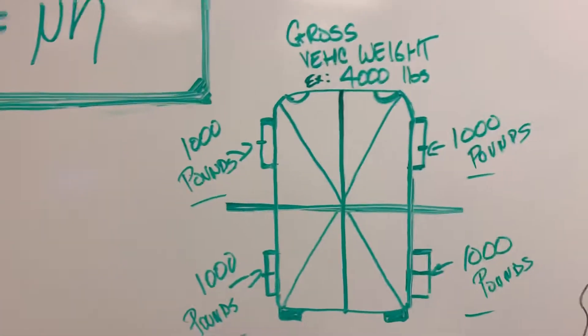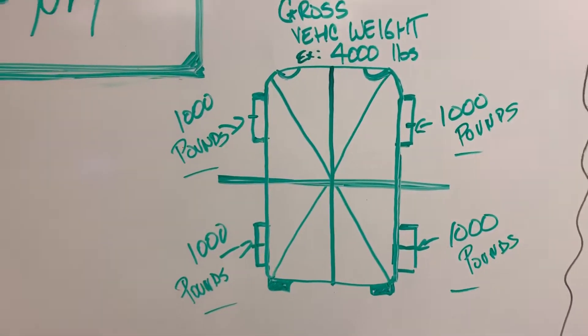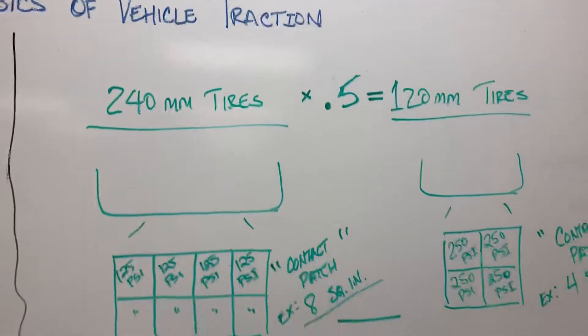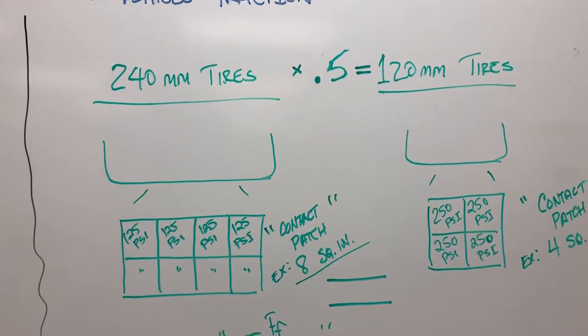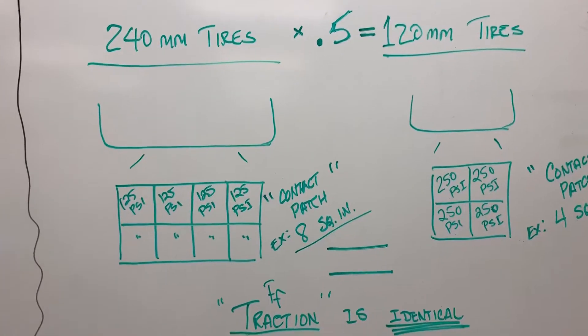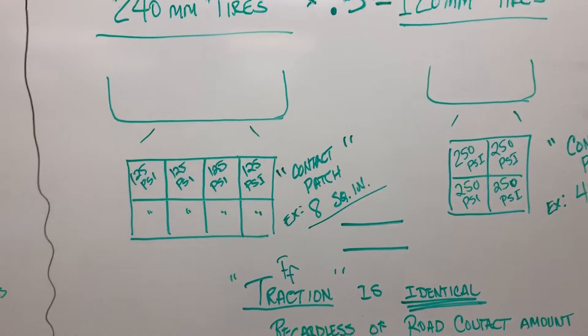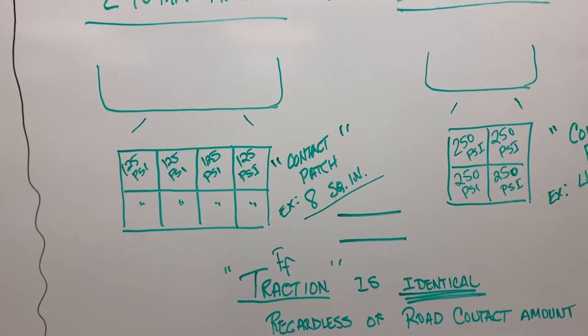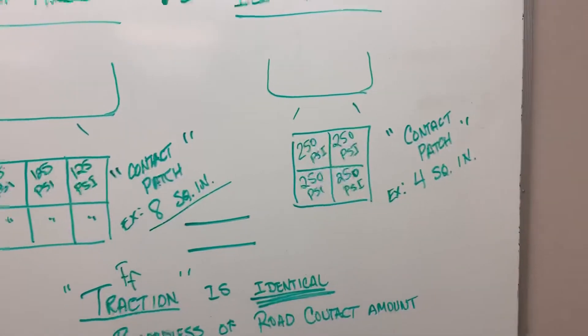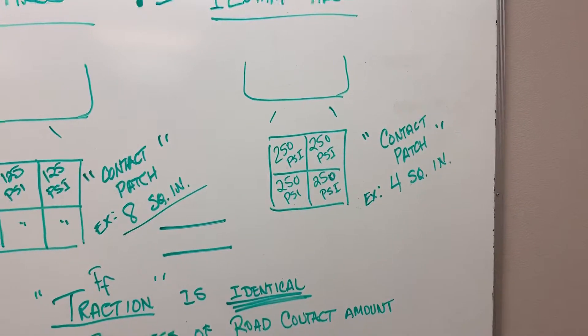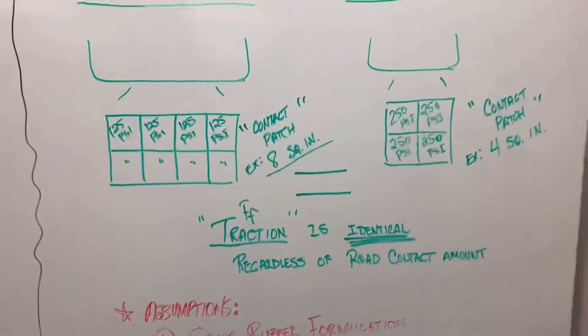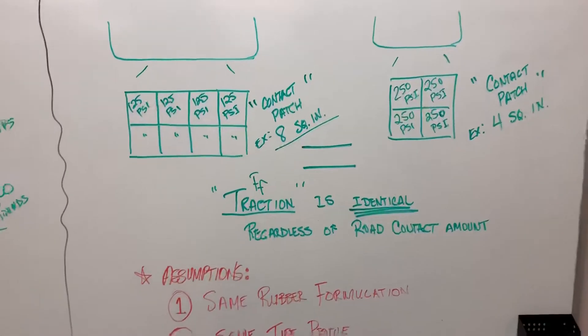If I have a car which weighs 4,000 pounds divided into equal quadrants of 1,000 pounds, let's take a look at this half of the board. I have a tire that's 240 millimeters wide and a tire that's 120 millimeters wide. That means my contact patch of 8 square inches has 125 PSI in each square inch, and my contact patch on the smaller tire has 250 PSI per square inch. That means nothing changes. My traction on both of these is identical.